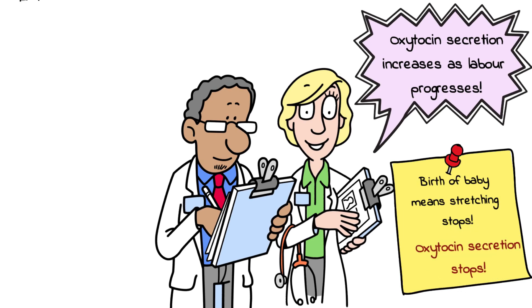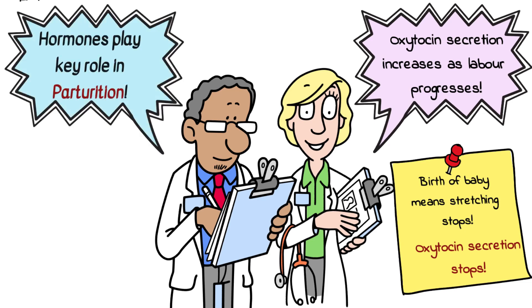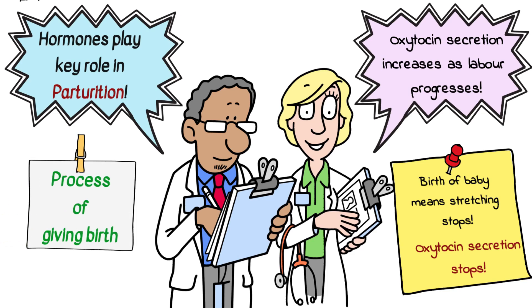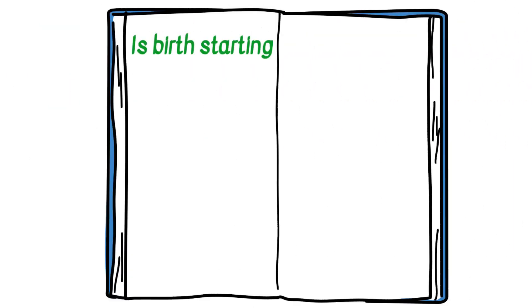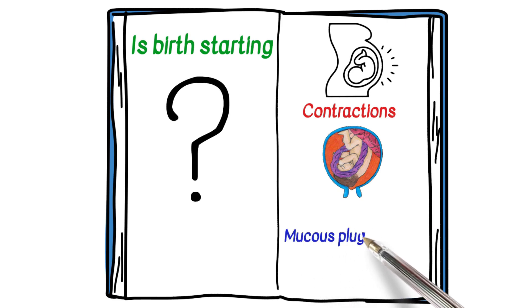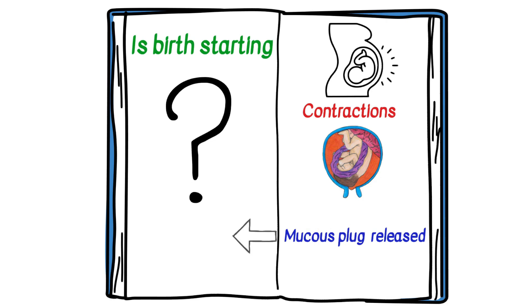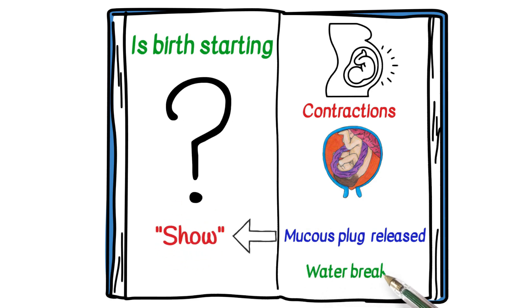We can now appreciate the role of hormones in the process of giving birth, which is known as parturition. Remember this is a very simplified version — there are many other hormones and more complex processes involved. A previous exam question asked how you would know if birth is starting. The first indicator is that the woman feels contractions. Another sign is the mucus plug sealing the cervix gets released, which is referred to as a show. Another sign is that the waters break — the amniotic sac bursts releasing the amniotic fluid.